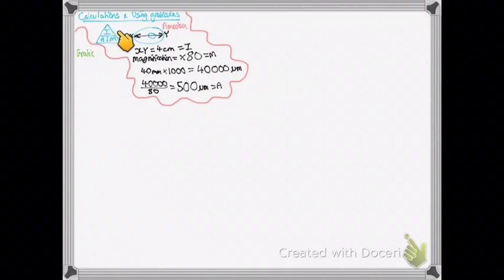So 40,000 micrometers divided by your actual, which we would have told you is 500 micrometers. And then you end up getting your magnification of 80. So just learn that triangle and you'll pretty much be able to answer any question.